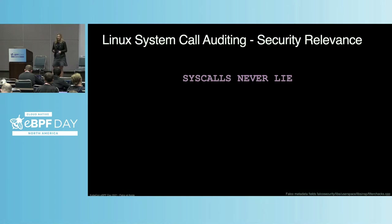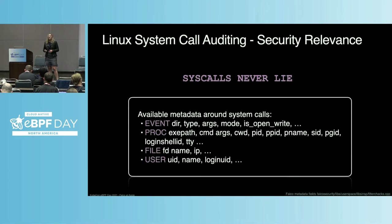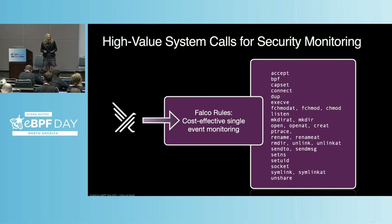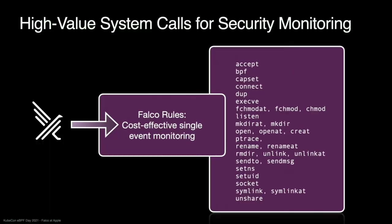When a system call is made, it is the metadata around the system call — most notably the process execution path, command args, or file descriptor name — that is essential to determine if the observed behavior is unusual or even malicious for your environment. Here's a list of the most important system calls from a security monitoring perspective. They are important because they cover behavior observed in many exploitations.